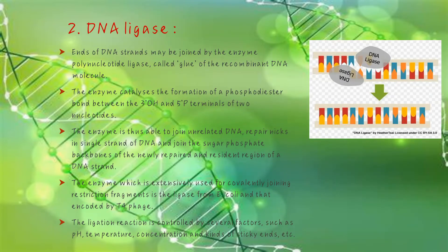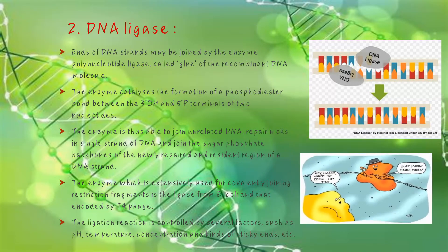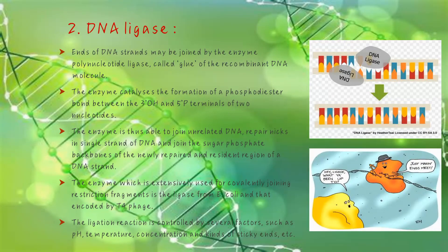DNA ligase. Ends of DNA strands may be joined by the enzyme polynucleotide ligase, called the glue of the recombinant DNA molecule. The enzyme catalyzes the formation of phosphodiester bonds between the 3-OH and 5-P terminals of two nucleotides. The enzyme is thus able to join unrelated DNA, repair nicks in a single strand of DNA, and join the sugar phosphate backbones of the newly repaired and resident region of a DNA strand.